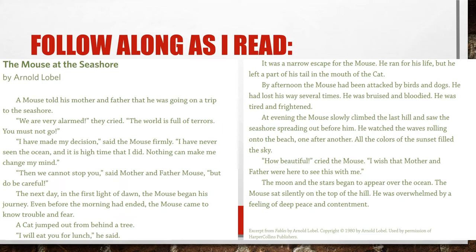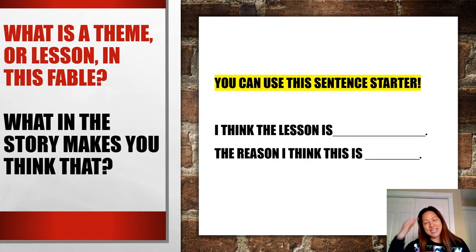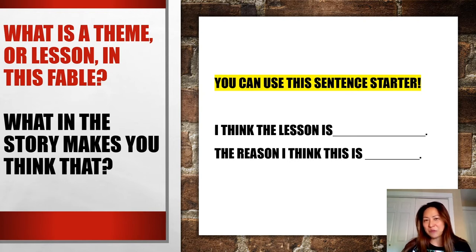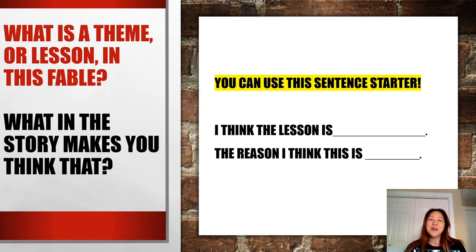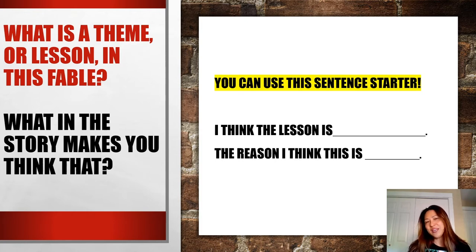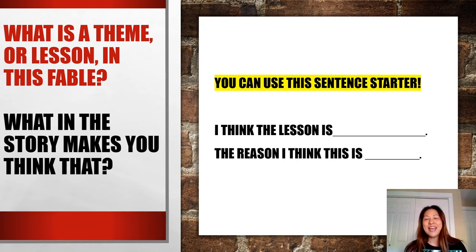Now with the second read-through, what is something that people can learn from the mouse in the story? Not only do I want you to share what the theme or lesson is, but also what in the story makes you think that. You can use the sentence starter: 'I think the lesson or the theme is... and the reason I think this is...' For myself, I think one of the themes is that even though times are really tough, if you keep pushing on, you can achieve your goals. The reason I think this is because the mouse went through a lot of hardship but at the end got to his dream of seeing the ocean. There are other themes you might be thinking as well — here's an opportunity to write those down or share them with someone around you.